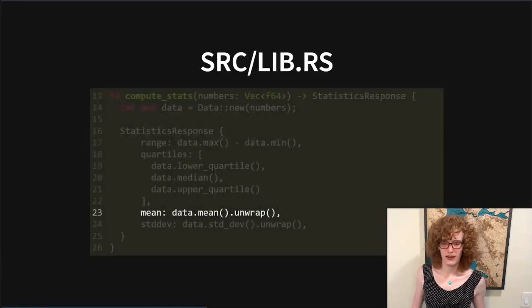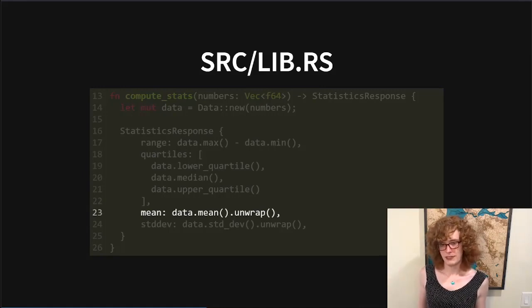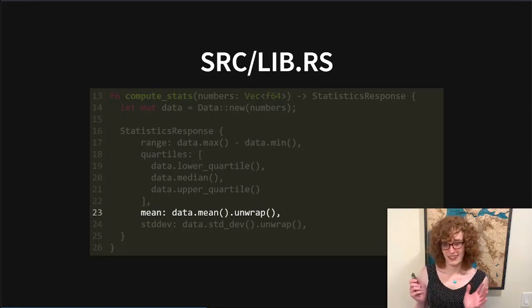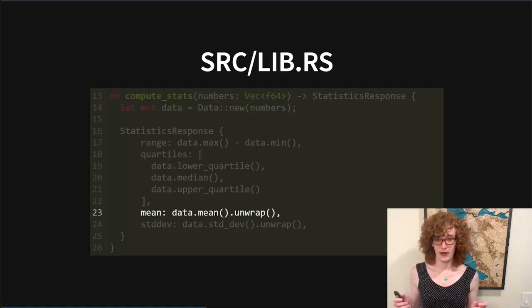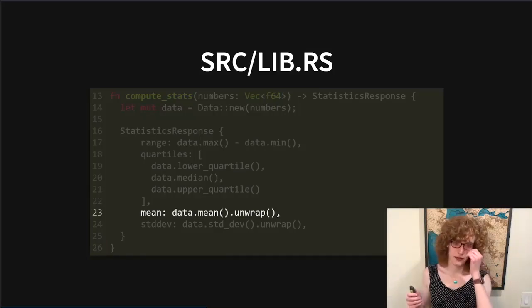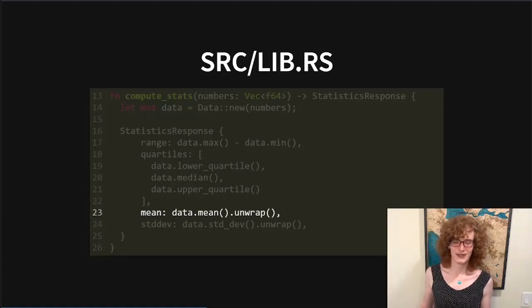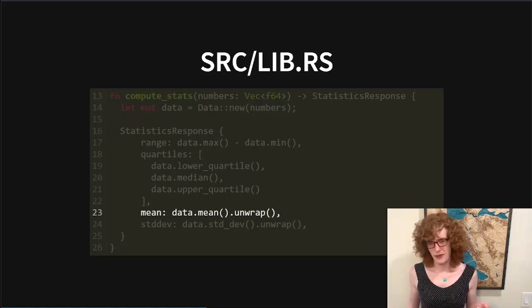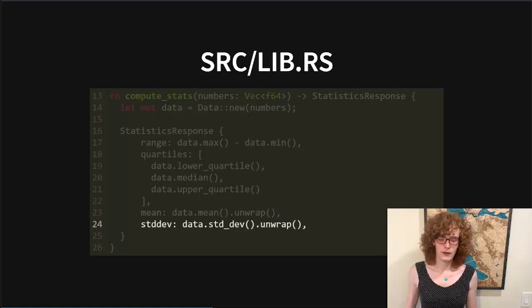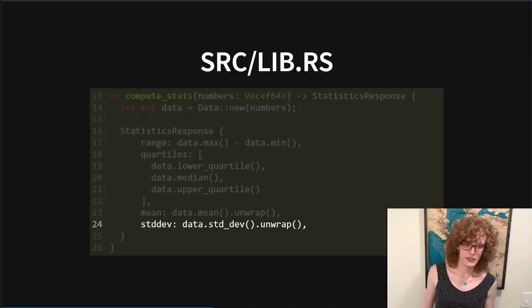So on this line, we have `data.mean()`, which returns an `Option<f64>`, and then we call `unwrap` on it. Unwrap will look at the option — if there's a value present, it returns the value; if there's no value present, it will panic the whole thread and unwind to a point where there's a panic handler. Generally speaking, in production code you don't want to be using unwrap — you want proper handling with a match statement. But this is quick and dirty, so we're going to use unwrap. If you'd like more information on using options, I believe you can read chapter 6 of The Rust Programming Language. Similarly, when we calculate the standard deviation, this function also returns an Option, so we also need to use unwrap on it.